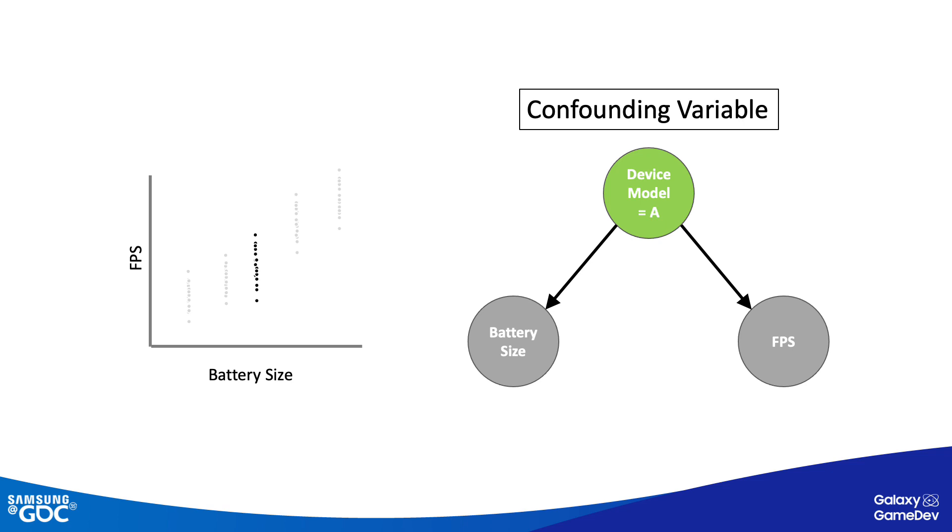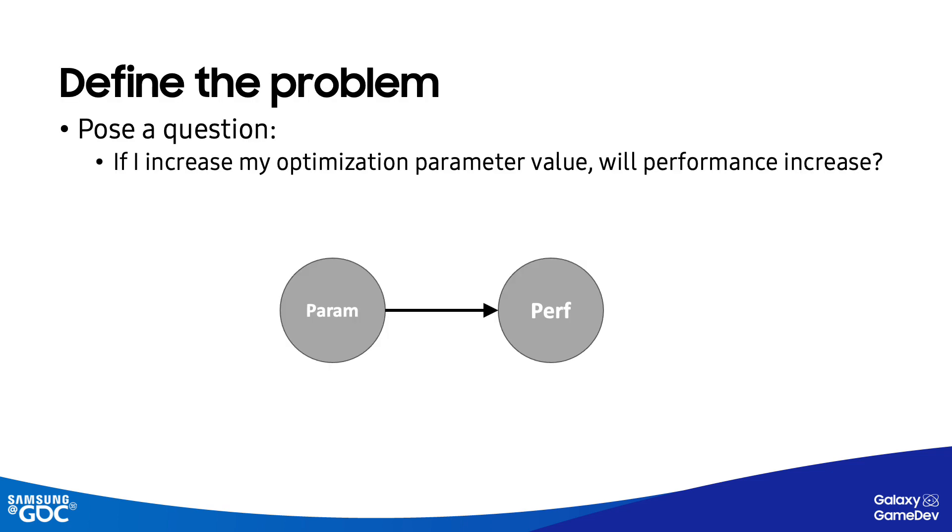So now we have a tool to use for our original problem of game performance optimization. It seems to have some nice properties in that we can explicitly state what we know about a system, encoding that knowledge as nodes and edges of the graph. We can use data we have available to define the conditional probability distributions, and we have a mechanism to remove the effect of some variables, allowing us to examine some relationships and not others, focusing on just the ones we care about. So let's first take a step back and clearly state what we want to know by posing a question. In this case, if I increase my parameter value, will performance increase? Already with this we can set up a very simple graph with one edge. But let's think about how we can build a more expressive causal model.